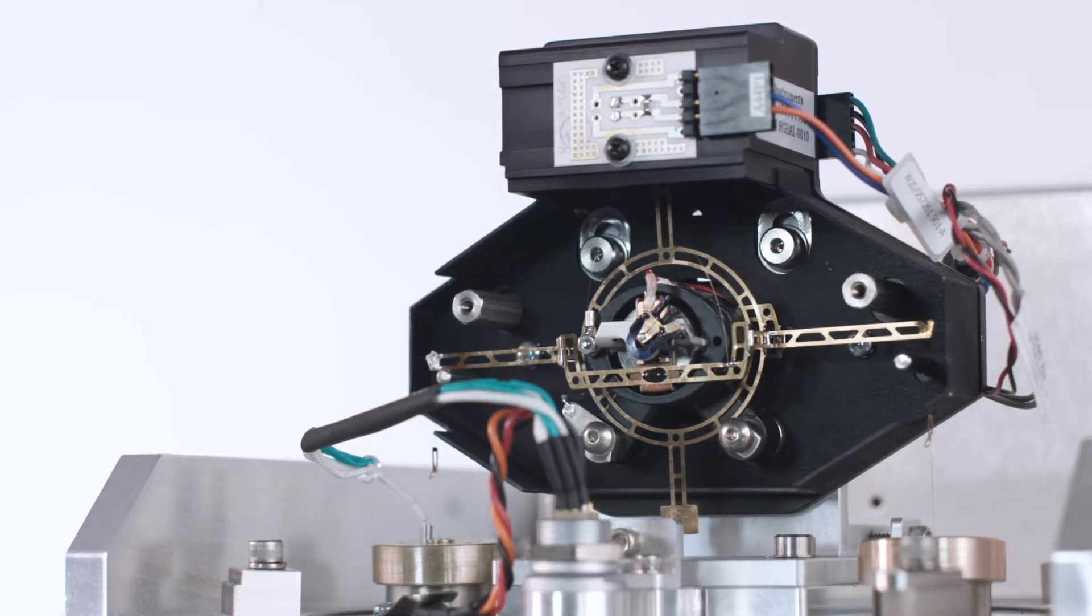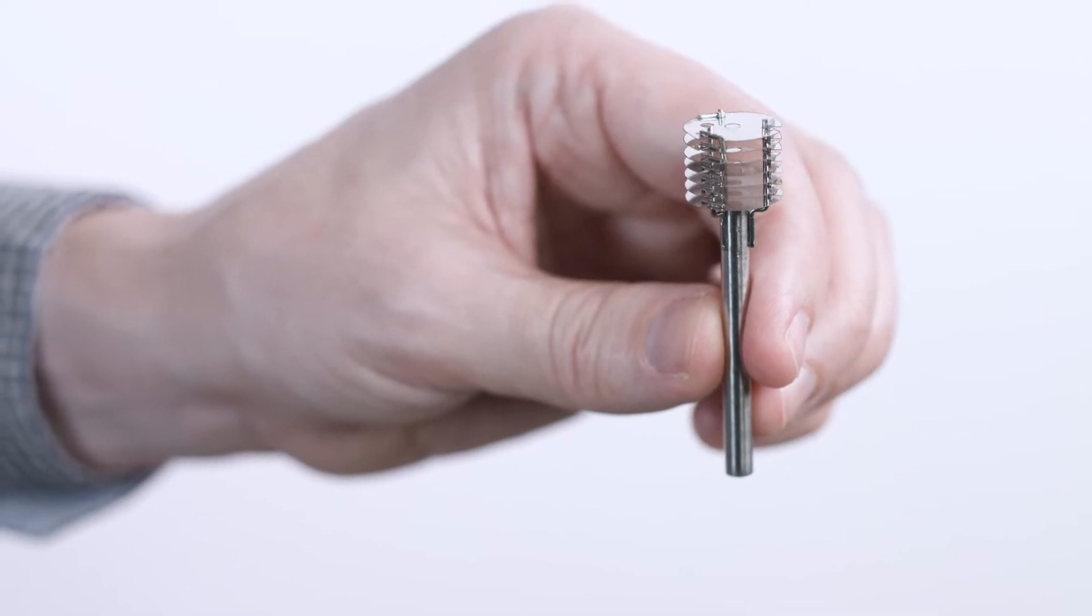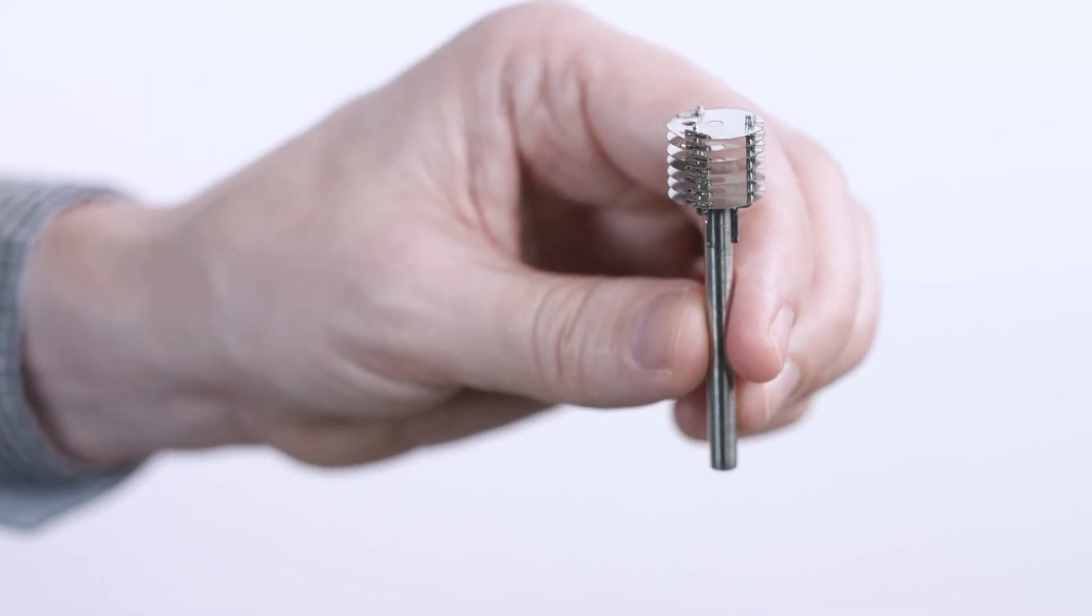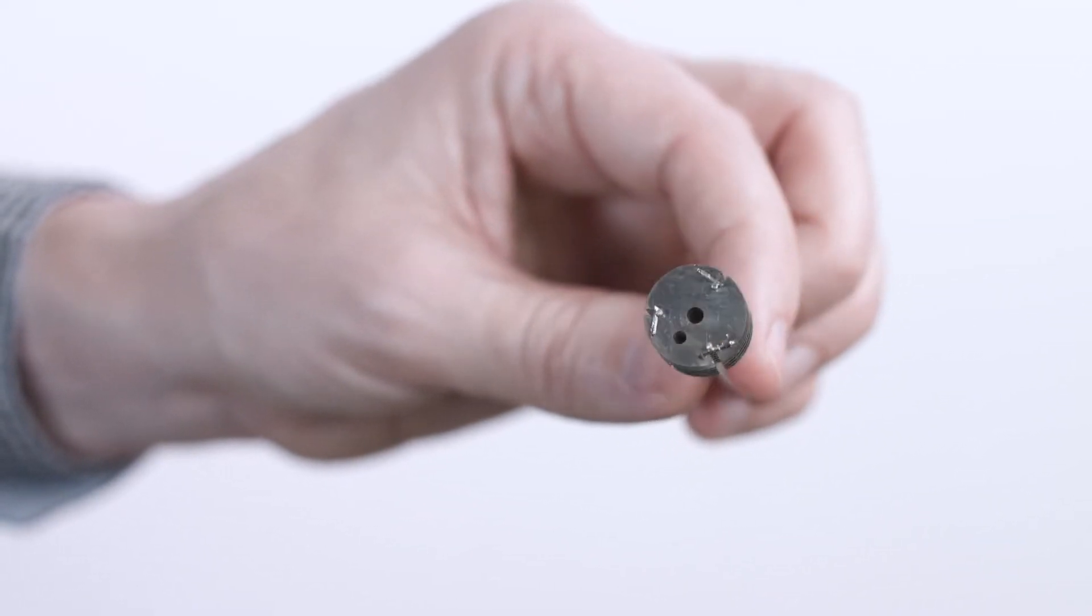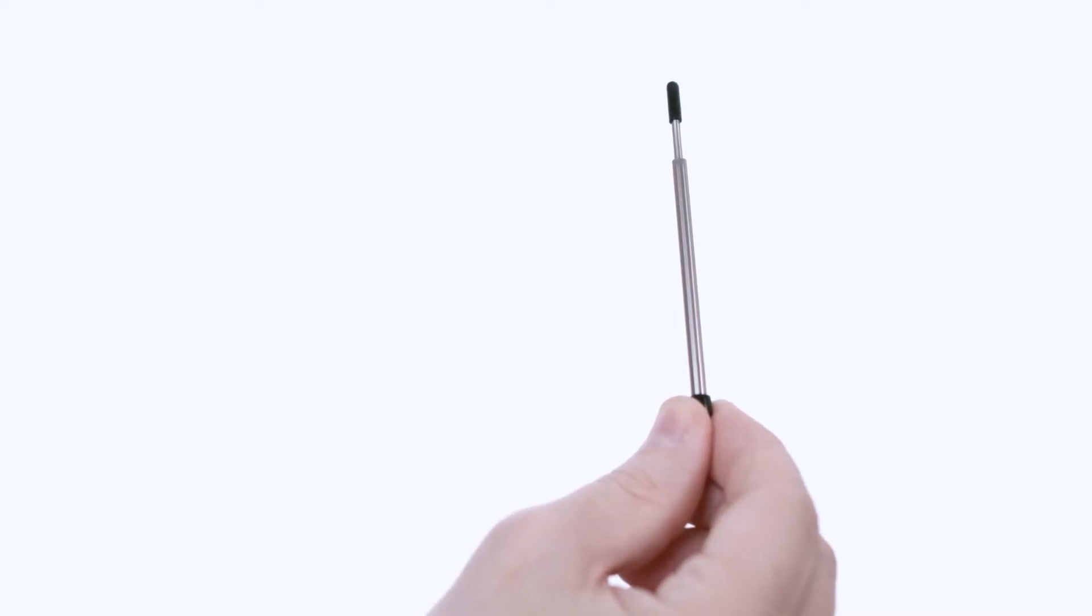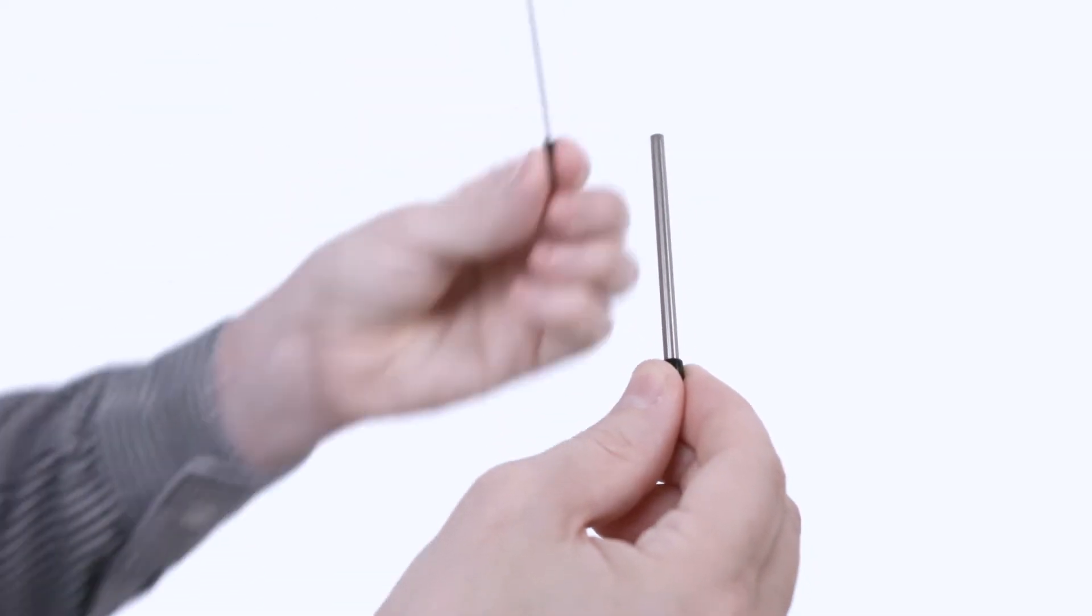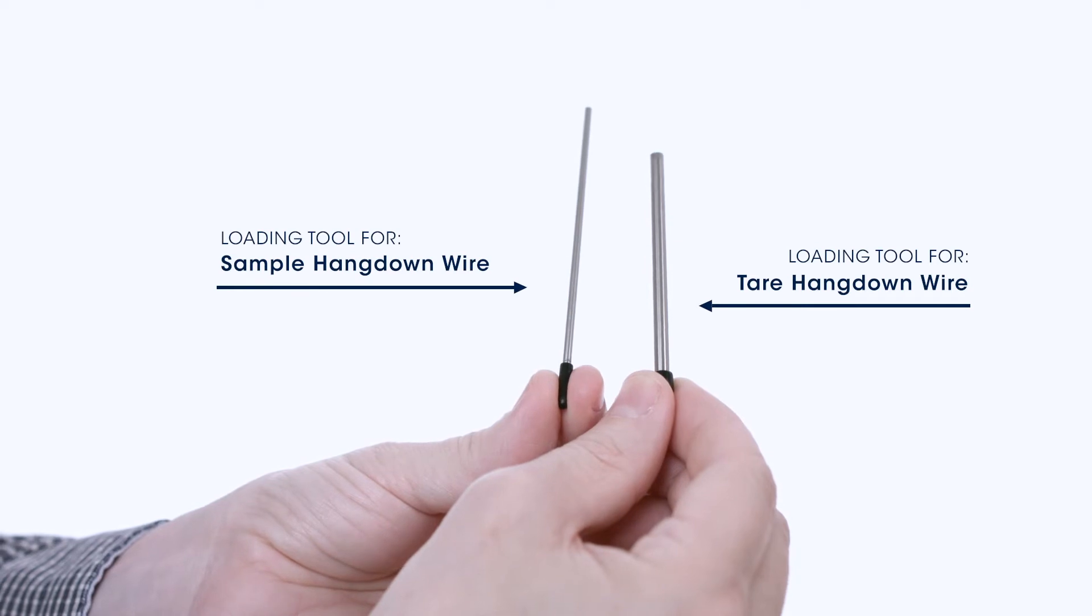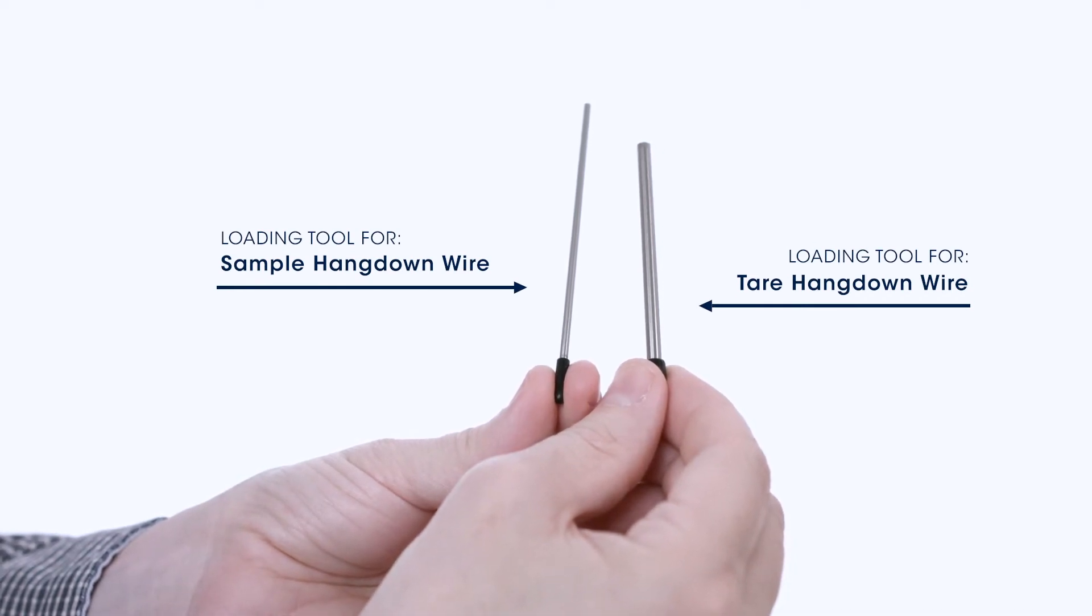The upper furnace assembly, shown here, has a hole in the center, which the tool to remove the hang down wire must be inserted through as shown in the next sequence. Select the sample loading tool from the accessory kit. Please note that the sample loading tool has a flange at one end. It may be removed prior to use, though it is not necessary.